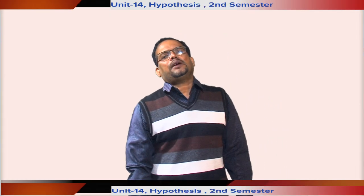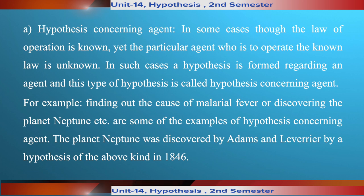You see the first one, that is hypothesis concerning agent. In some cases, though the law of operation is known, yet the particular agent who is to operate the known law is unknown. In such cases, a hypothesis is formed regarding an agent, and this type of hypothesis is called hypothesis concerning agent.